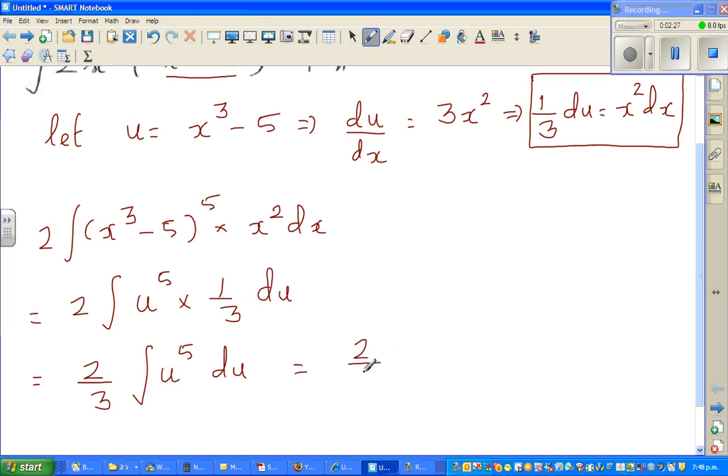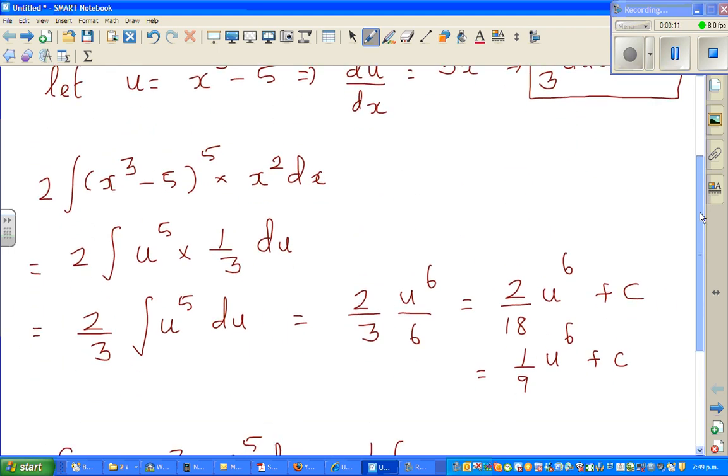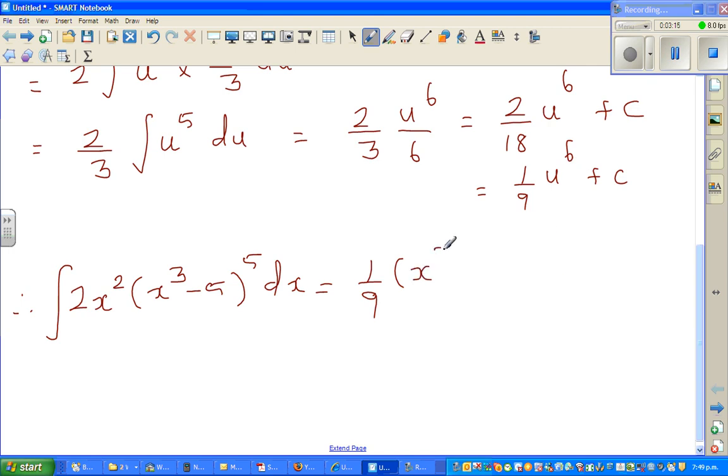And integration, this is pretty easy. U to the power 6 divided by 6. So this is nothing but 2/18th of u to the power 6 plus C, the constant of integration. And this simplifies to 1/9th of u to the power 6 plus C. But we want to write in terms of x. So therefore, you can say integration of 2x squared times x cubed minus 5 to the power 5 dx is 1/9th times, that was our U. So U was x cubed minus 5. So in place of U I can put x cubed minus 5 to the power 6 plus C.